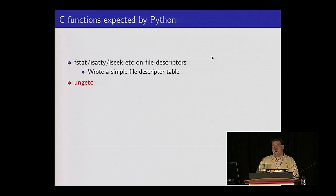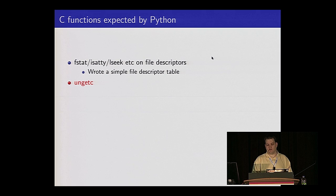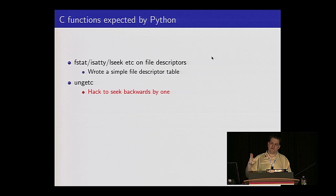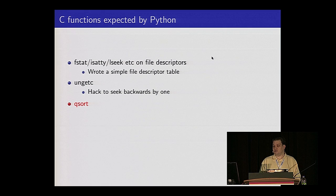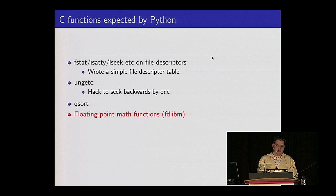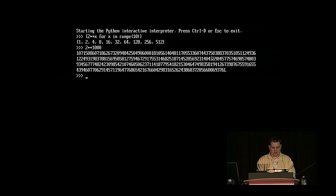There's a lot of other things we had to add. It turns out Python wants ungetc — 'please put this character I read from stdin back' — it uses that as part of its parser. Rather than adding a one-character buffer, we added a quick hack that says Python always ungots the character it just got, so just seek backward by one. We needed a qsort implementation — Grub didn't have any sort functions, so we ended up having to open-code that. We needed floating point math because Python does have float types.